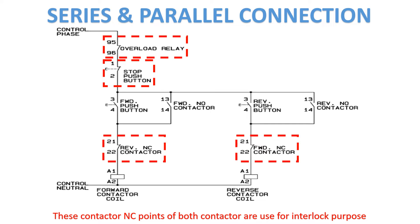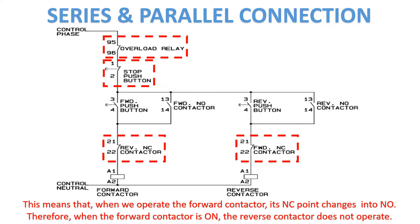These contactor NC points are used for interlock purpose. This means that when we operate the forward contactor, its NC point changes into NO. Therefore, when the forward contactor is on, the reverse contactor does not operate.